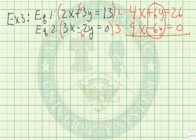So if we add these together, the y's disappear. 4x plus 9x is 13x. 26 plus 0 is 26. Divide both sides by 13. X equals 2.